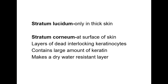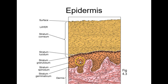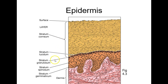The stratum lucidum is only seen in thick skin. When they stained really thick skin, a clear area appeared — but it turned out to be an artifact of staining, not a true separate layer. Above that is the stratum corneum, often drawn in yellow, which is the dead cell layer. Dermabrasion at the spa removes a lot of this upper stratum corneum.